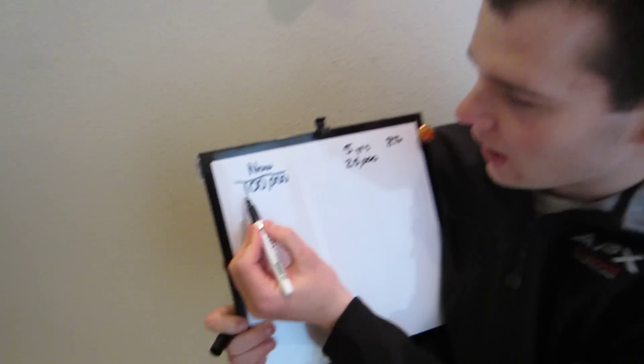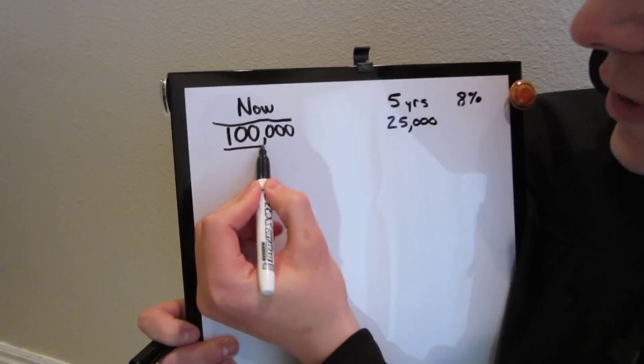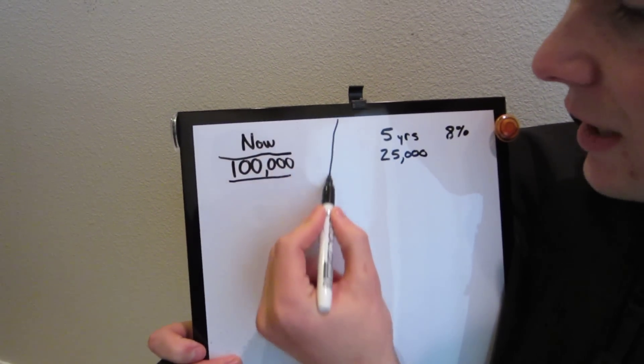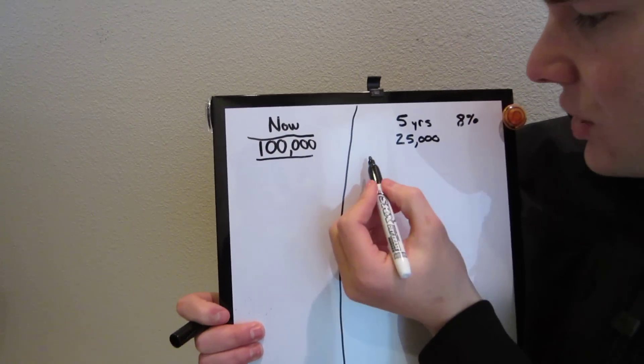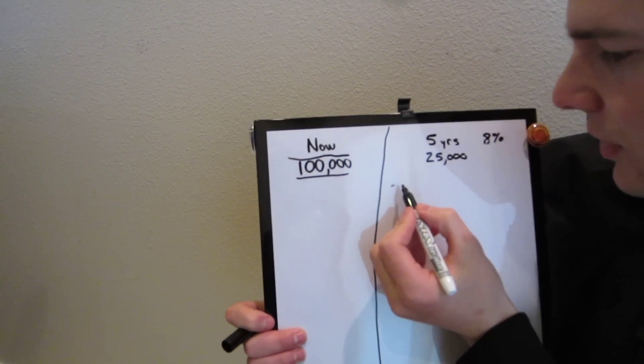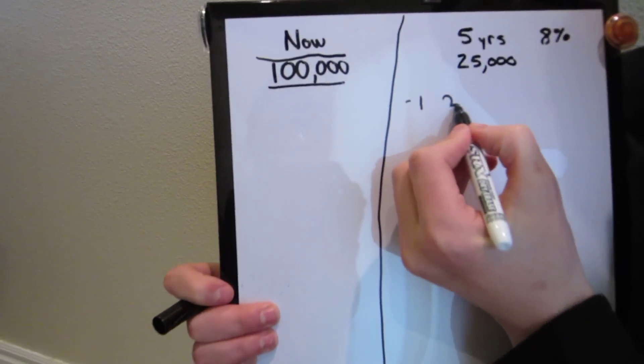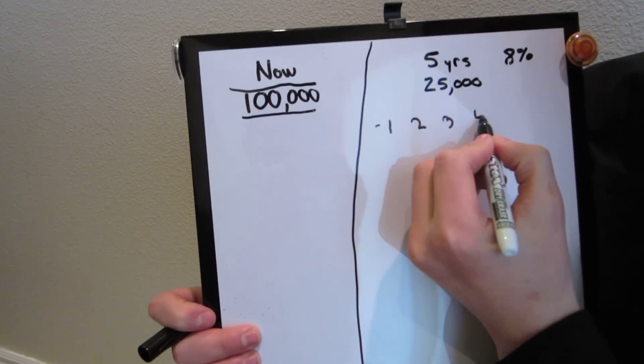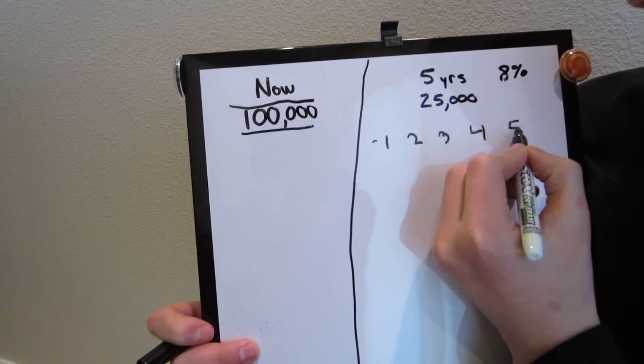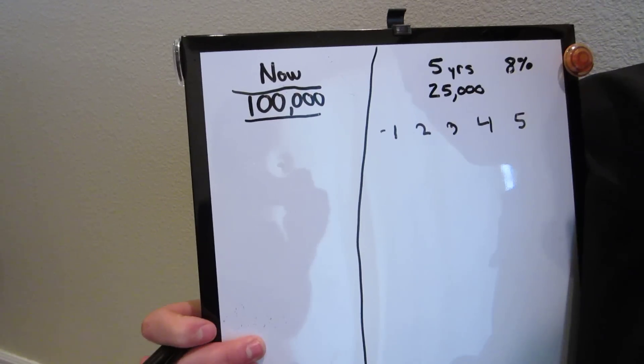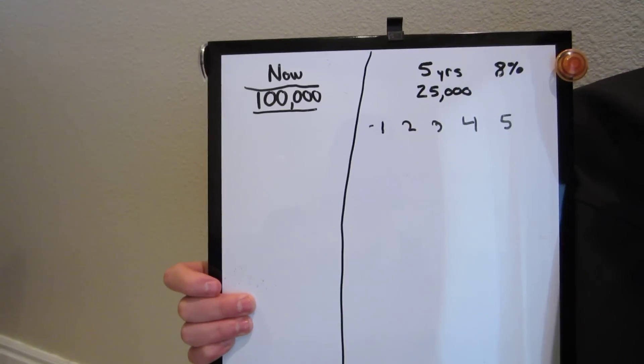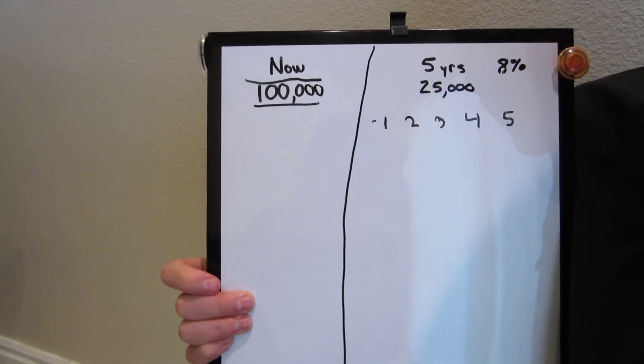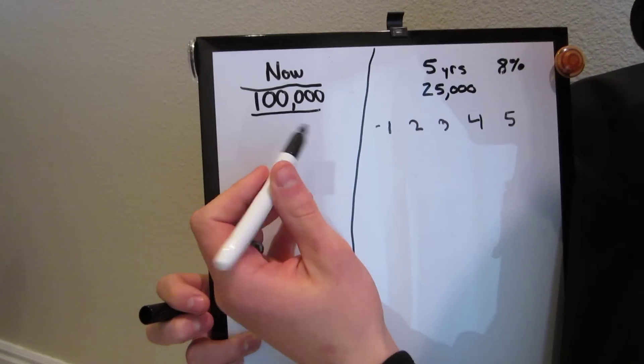So right now we're going to put $100,000 that you would receive now, and that's with the net present value. Or, the other option is going to be $25,000 per year, so year one, two, three, four, and five. And to make it a little more interesting, we're going to assume that the marginal tax rate is 35%.